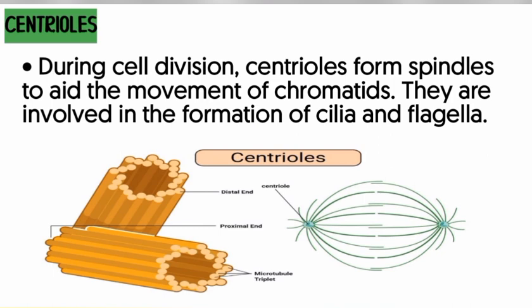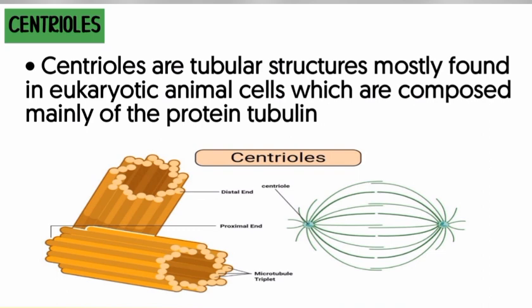Centrioles are found in animal cells and contain a particular protein called tubulin. Inside the centriole are structures called microtubules, and these microtubules contain the protein tubulin. We have alpha-tubulin and beta-tubulin.